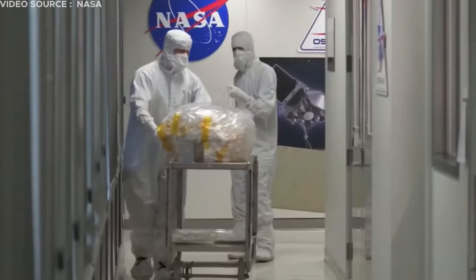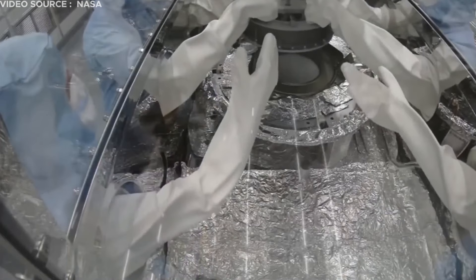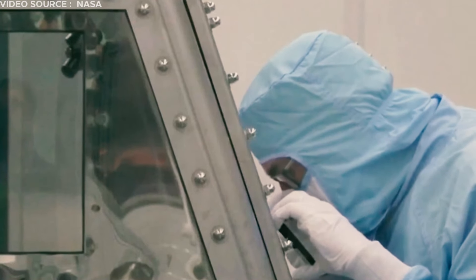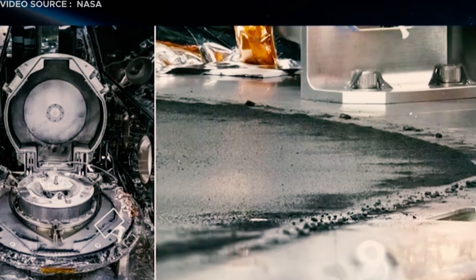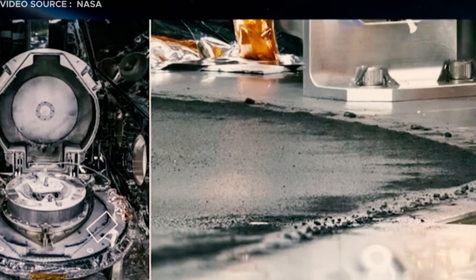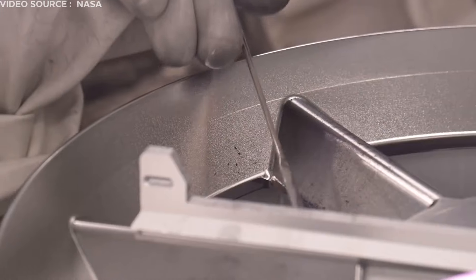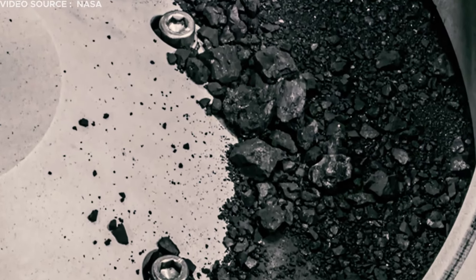However, upon landing, the Astro Materials Curation Team at NASA's Johnson Space Center in Houston faced a unique challenge. They managed to collect 2.48 grams of asteroid material from the sample hardware even before removing the lid. The remaining material from the Bennu asteroid sample includes dust and rocks, with sizes reaching up to about 0.4 inches.